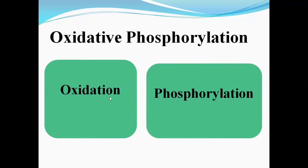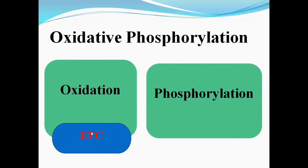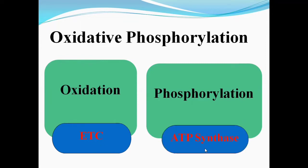Oxidation takes place by the electron transport chain, which releases energy. The energy released by the electron transport chain is captured by the ATP synthase. These two components are always present together and these two processes always occur simultaneously. The energy released is used by ATP synthase for the phosphorylation of ADP and inorganic phosphate to form ATP.